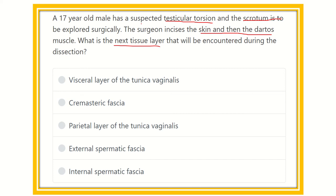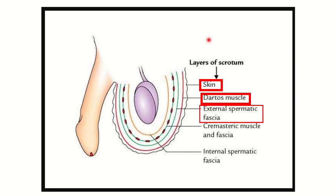They want us to learn the different layers of the scrotum. The options are: visceral layer of the tunica vaginalis, cremasteric fascia, parietal layer of tunica vaginalis, external spermatic fascia, and internal spermatic fascia. We have to find out which layer is located just below the dartos muscle, since the skin and dartos muscle have already been explored.